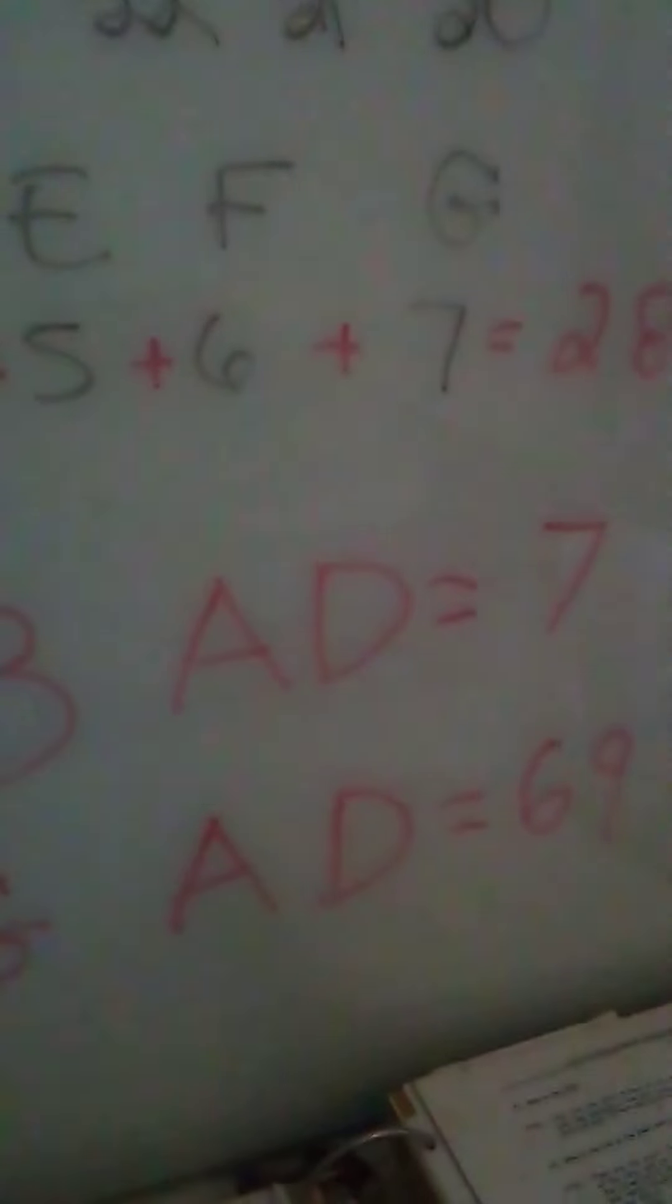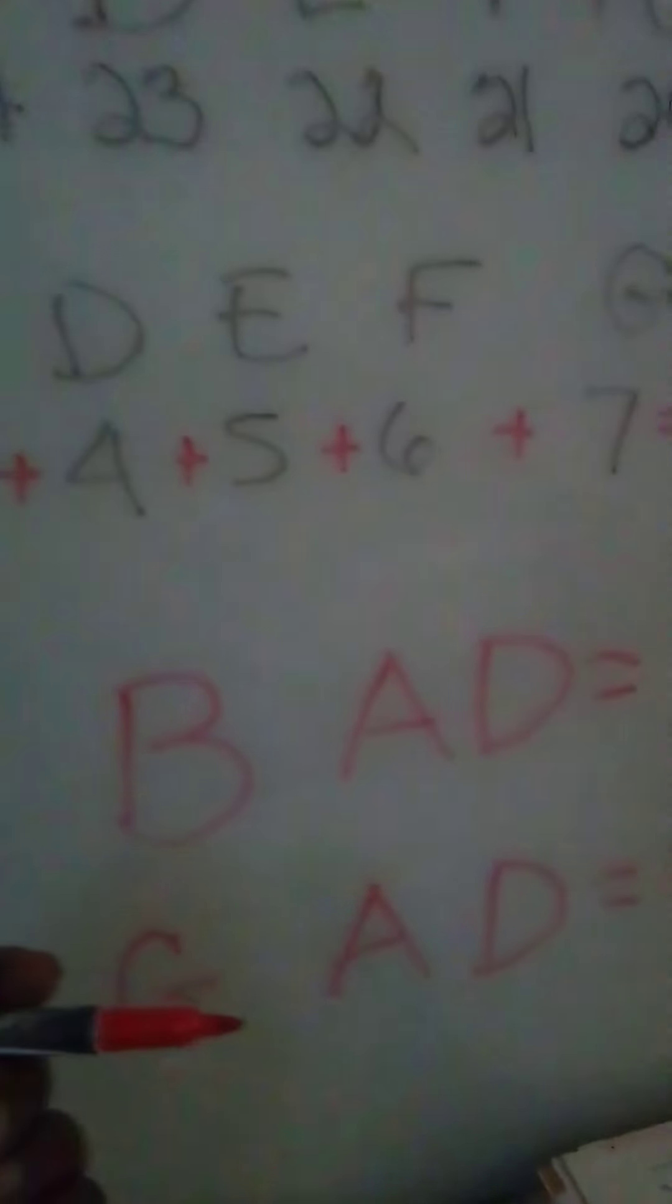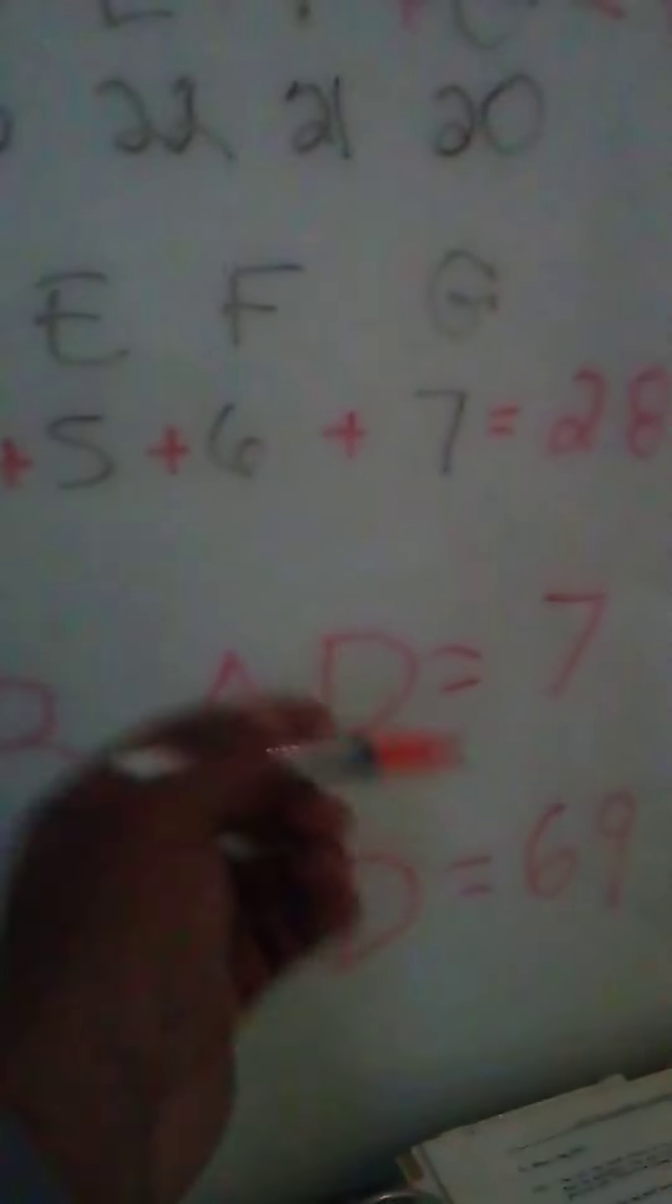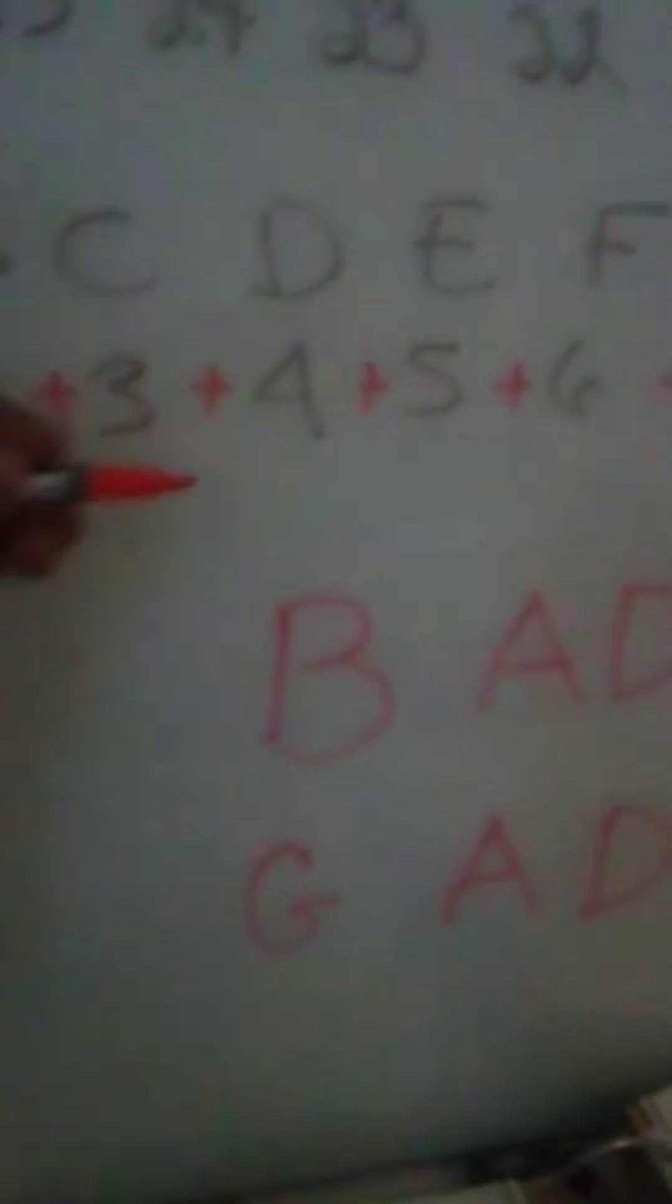So we're going to spell a word out so you can get an overview of what I mean by that. So if we took the word B, A, D, in the regular way you were taught in school, B would be a 2, A would be a 1, and D would be a 4, bringing us to a total of 7. Bad equals 7.